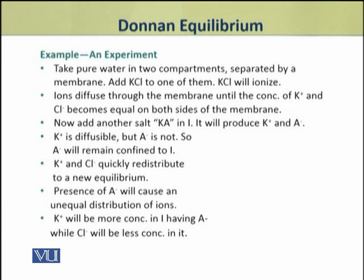To explain Donnan equilibrium, we shall take an example of an experiment in which we take pure water in two compartments separated by a membrane, and add potassium chloride to one of them. Potassium chloride ionizes into potassium and chloride ions.